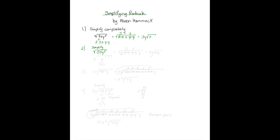Next, the square root of 50 times y to the third. Let's work on the 50 first and make a factor tree. Well, 50 is five times ten. Five is already a prime number, so we don't go further. But ten is five times two. Y to the third is going to be y times y times y. So let's rewrite these factors underneath a square root symbol: two times five times five times y times y times y. Now let's pull the pairs out. The fives are a pair — one comes out.